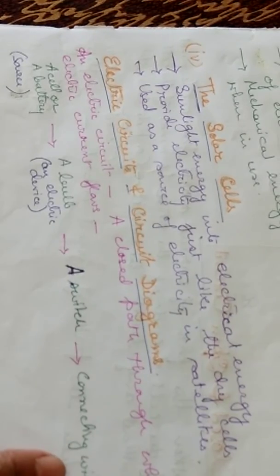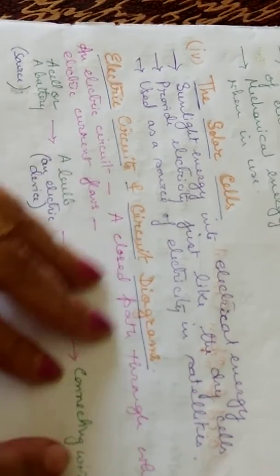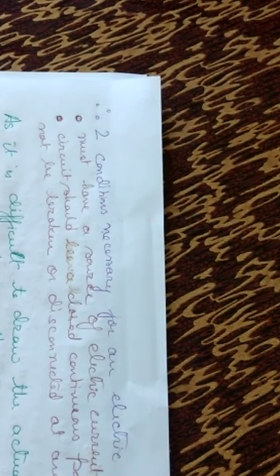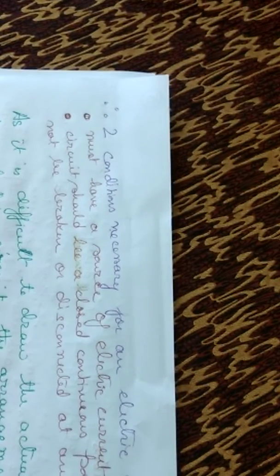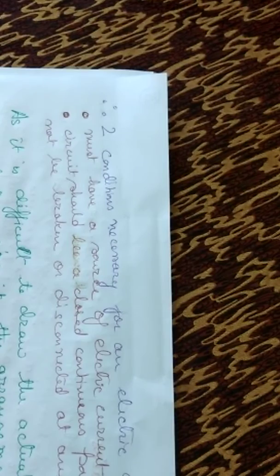So this makes a complete circuit. Then two conditions are necessary for the electric current to flow. It should have a source of electric current and the circuit should be a closed continuous path. In a continuous path, it should not be broken or disconnected at any point. Then the electric current will not flow.